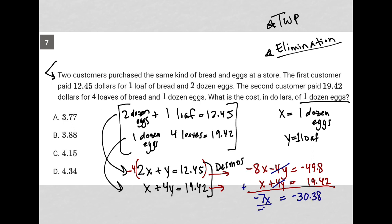And then I can divide both sides by negative 7. So back in my calculator, divide by negative 7. And I get 4.34. So I get X is equal to 4.34. So there's my answer. So my answer here is choice D.